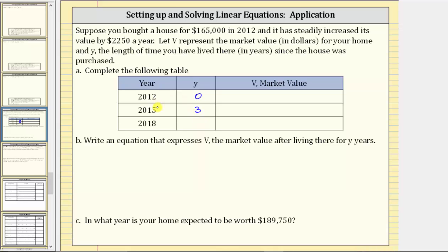Notice how we can determine the value of Y by taking the given year and subtracting the base year or the year you purchased the home. 2015 minus 2012 is three. In 2018 you've lived in the home six years because 2018 minus 2012 is six and therefore Y is six.